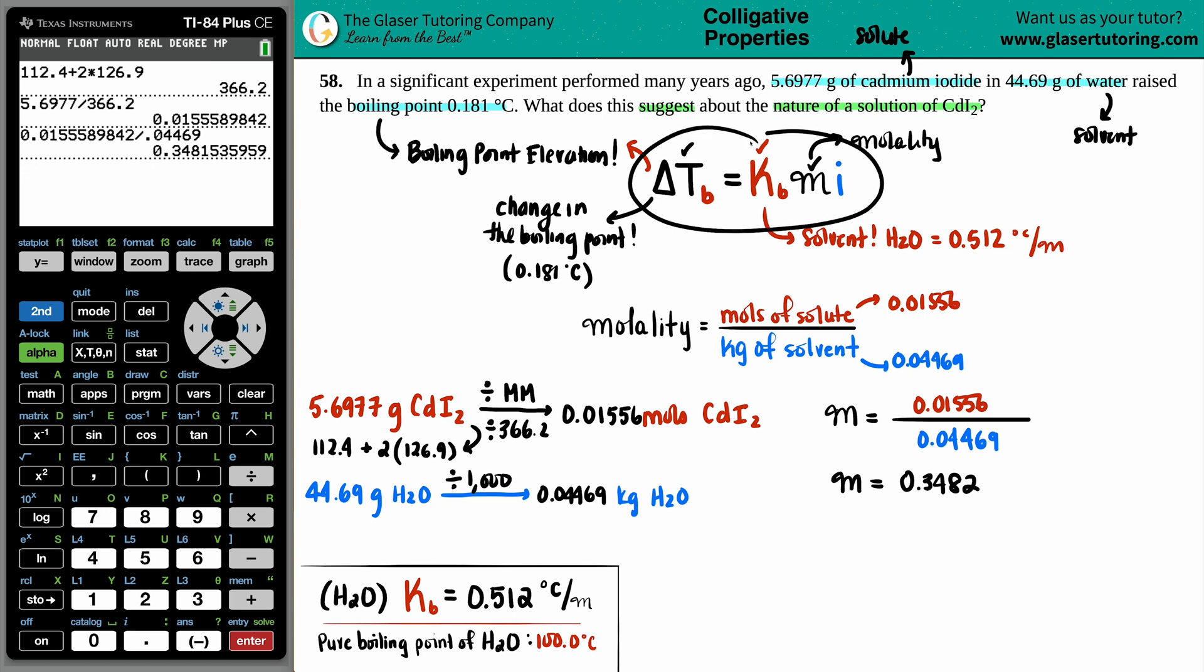Remember, we're still trying to use this formula. So if I have the delta Tb, I have the Kb, I have the M, we're going to solve for the I value. And the I value is the Van't Hoff factor. This is going to tell you if the cadmium iodide, the CdI2, is it acting as an electrolyte or a non-electrolyte? So that's where we're at right now. We're going to find that out.